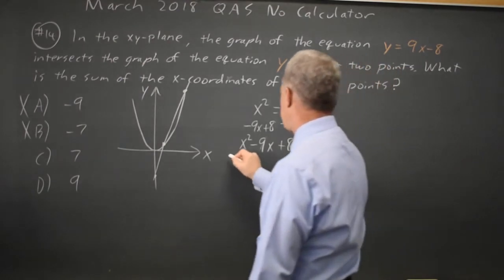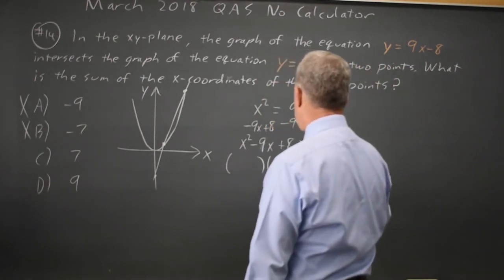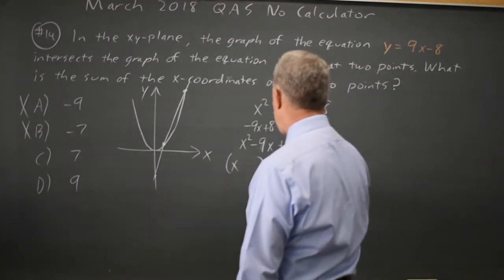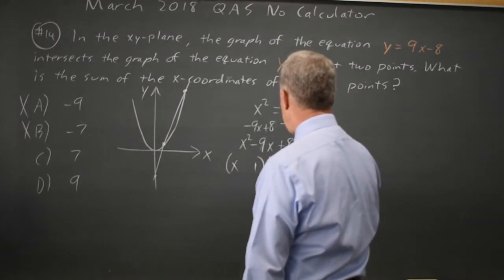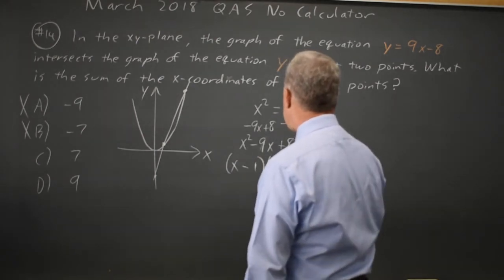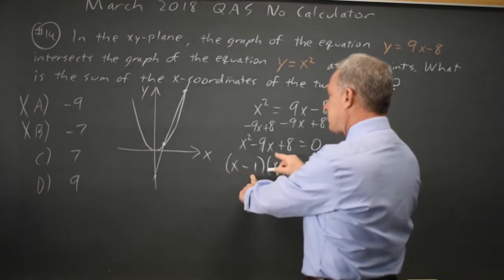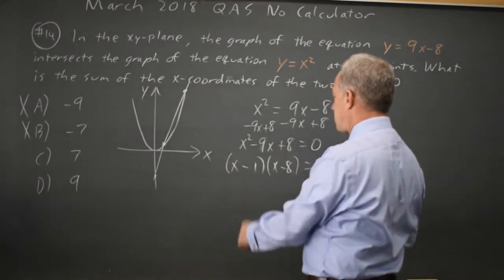We can factor x and x, 1 and 8, both minus. The FOIL gives me x squared minus 8x minus 8x is minus 9x plus 8.